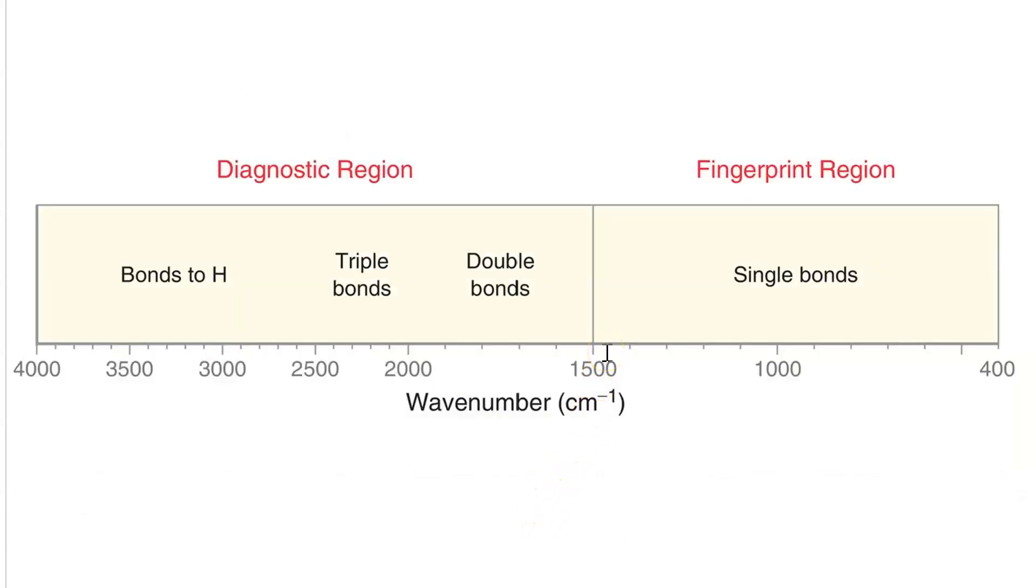The region of the spectrum that we are going to pay most attention to is the diagnostic region. That is, everything at 1500 wavenumbers and higher. Learning how to decode the fingerprint region is much more difficult, and beyond the scope of this class. But, if you get good at interpreting things in the diagnostic region, you'll be in good shape.